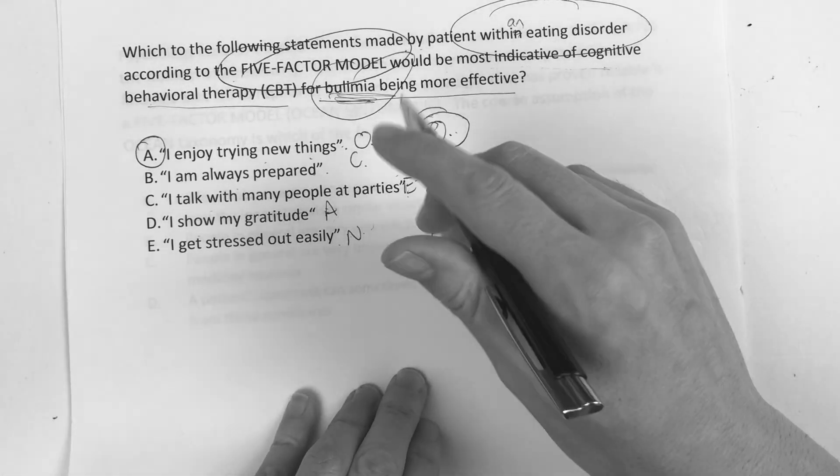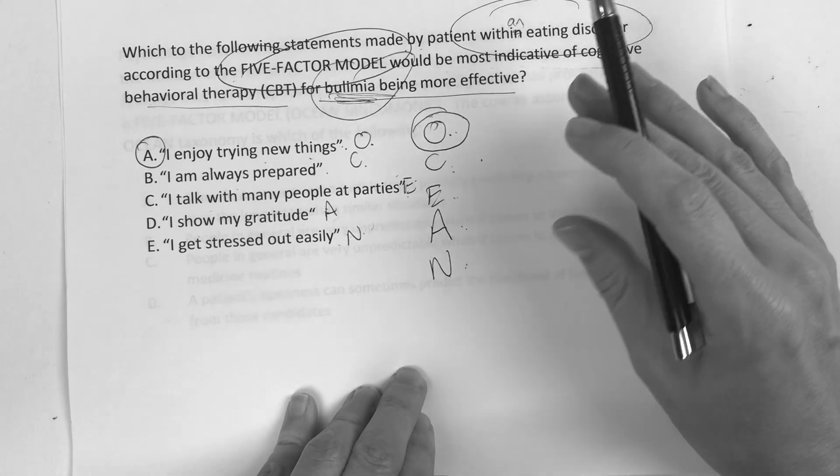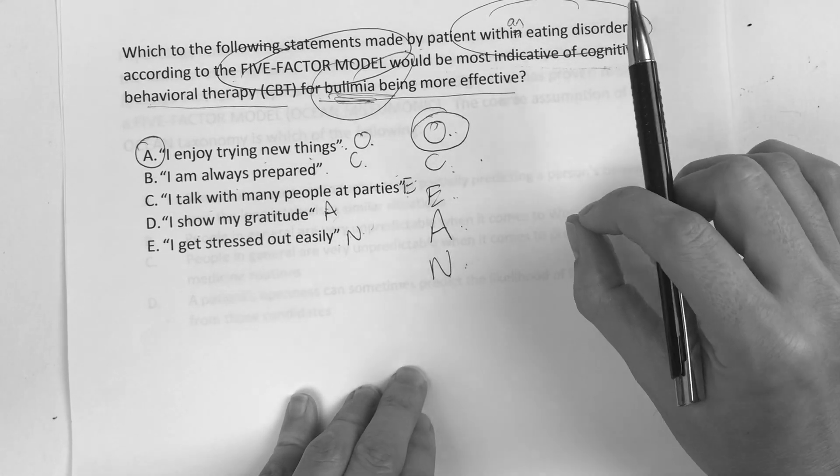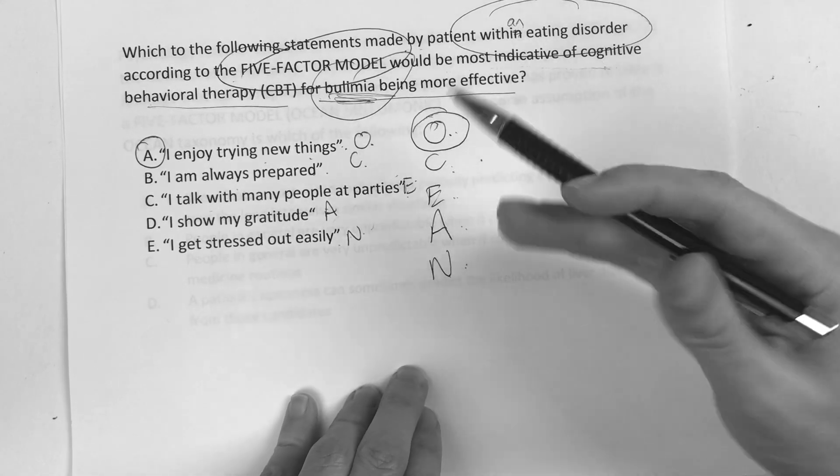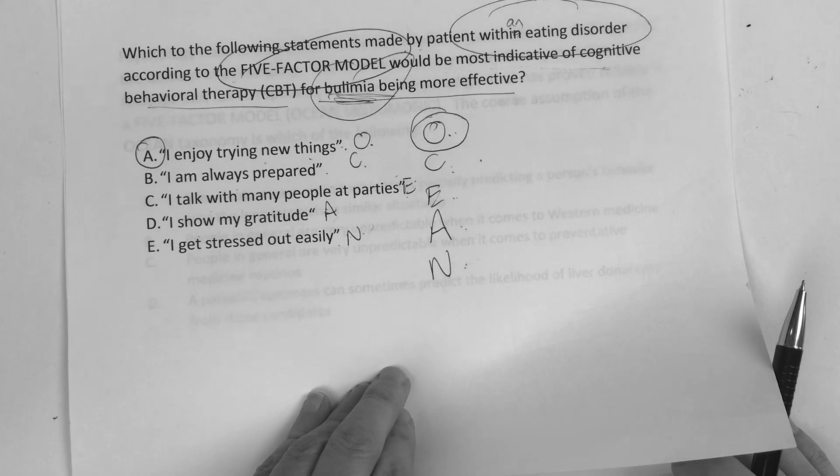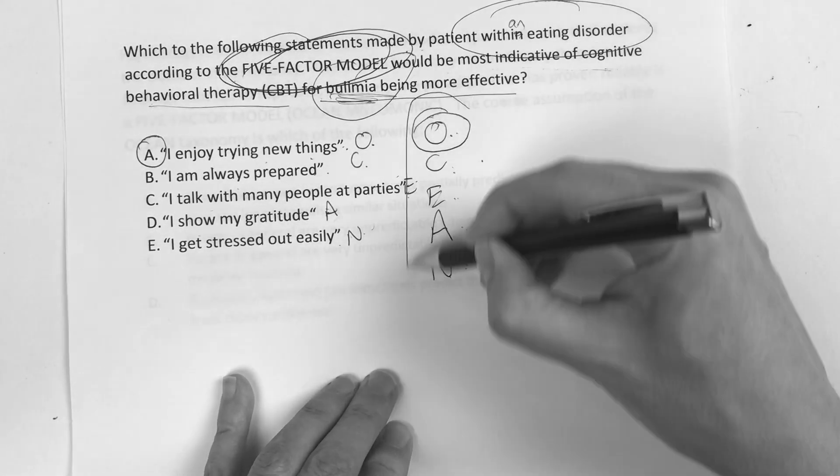Now there were some limitations to the five-factor model that they did do in the research paper. Everybody has kind of little nuances in their personality. It's difficult to use in new situations. And of course the physician can also be biased. But anyways, five-factor model, OCEAN.